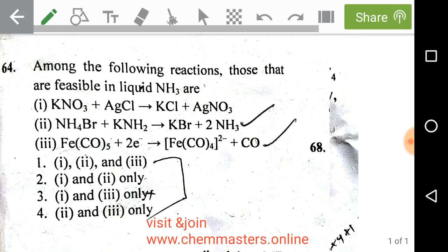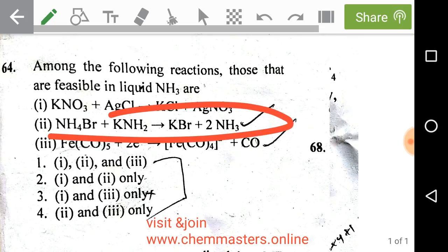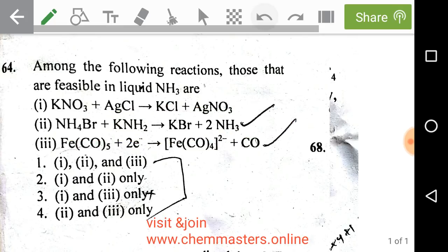Next, ammonium bromide and KNH2 (potassium amide) reacting to give KBr plus 2NH3. Here you can see salt formation is observed. Salt formation reactions are also possible in liquid ammonia, so the second reaction is also correct.